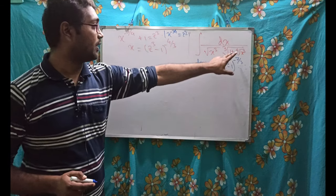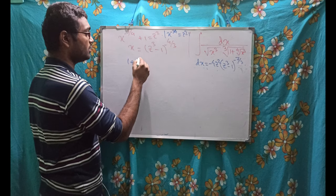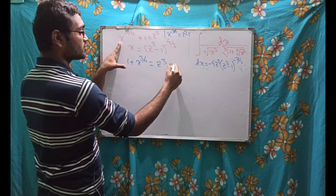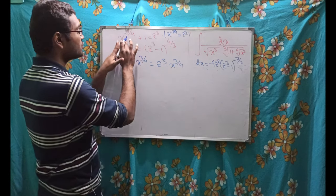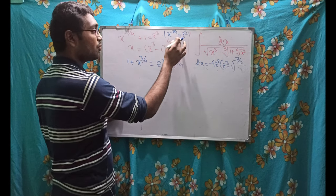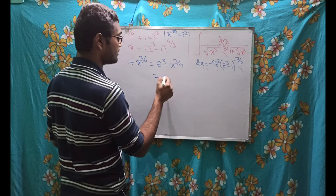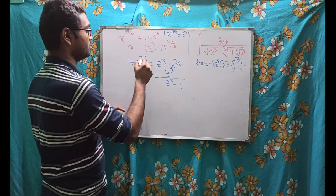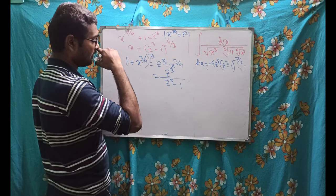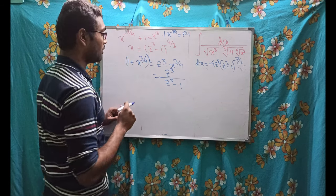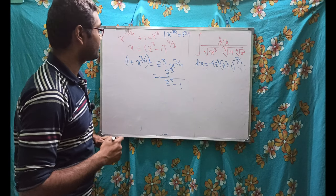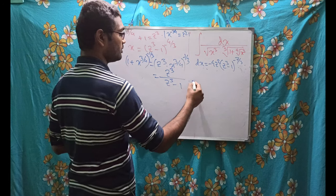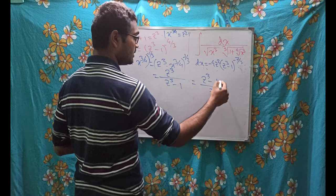From the substitution x^(−3/4) + 1 = z^3, we get 1 + x^(3/4) = z^3 · x^(3/4). Since x^(−3/4) = z^3 − 1, it follows x^(3/4) = 1/(z^3 − 1). Therefore (1 + x^(3/4)) = z^3/(z^3 − 1). Taking this to the power −1/3 gives us (z^3 − 1)^(1/3) / z. Also, x^(3/2) = (z^3 − 1)^(−2). We now have all the pieces needed for substitution.